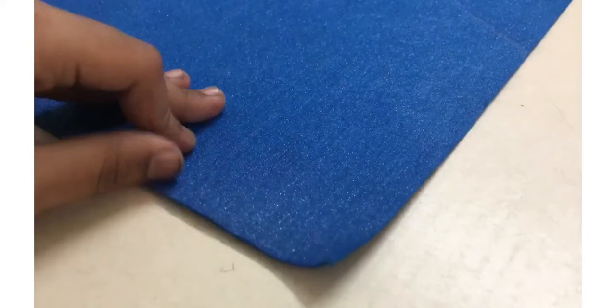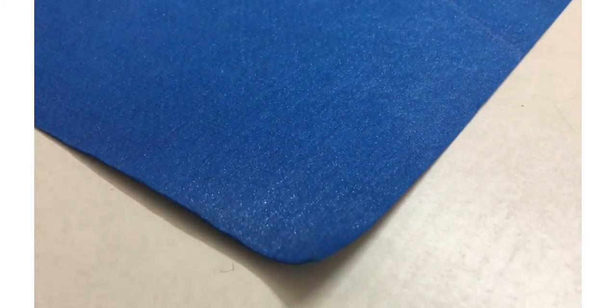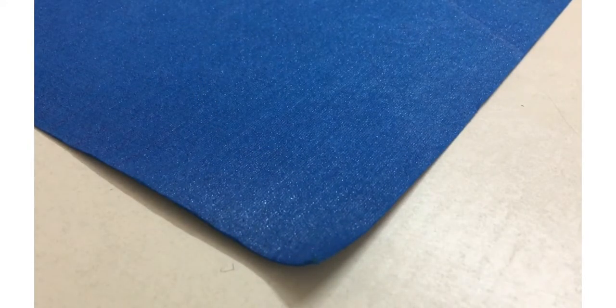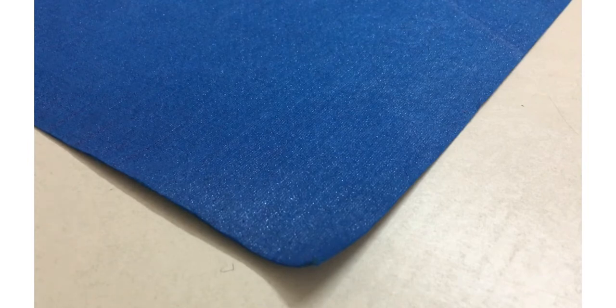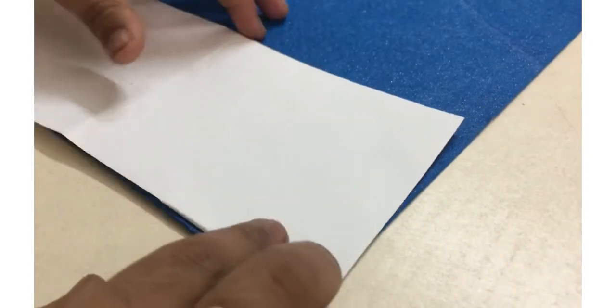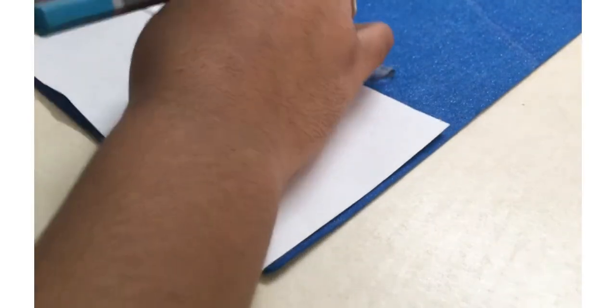As you can see, we will take the glitter paper and take the sheet you have. Draw the outline with the scale. Cut the outline.